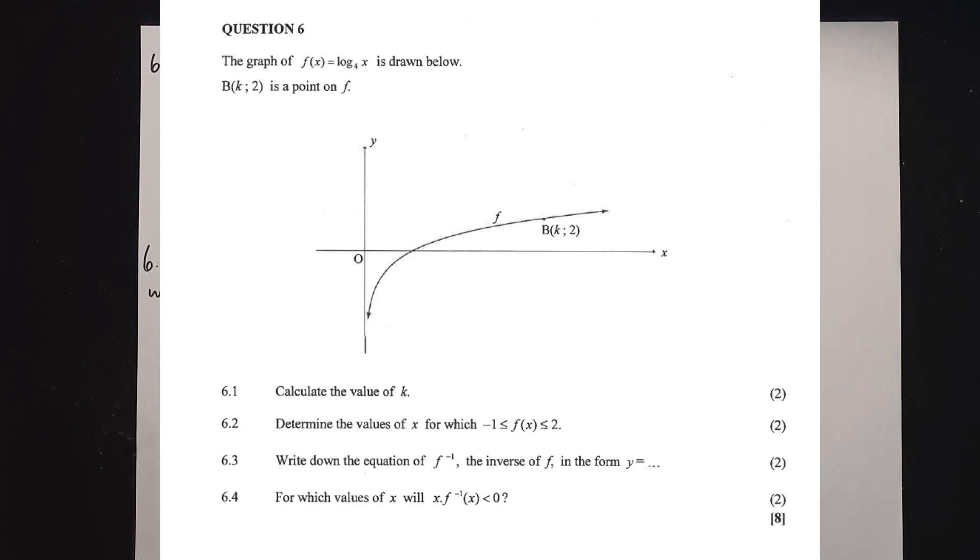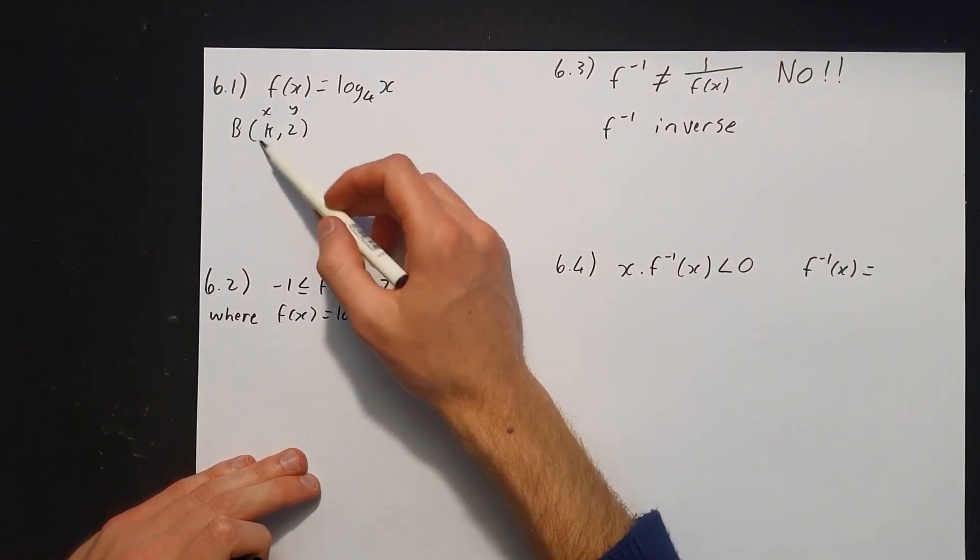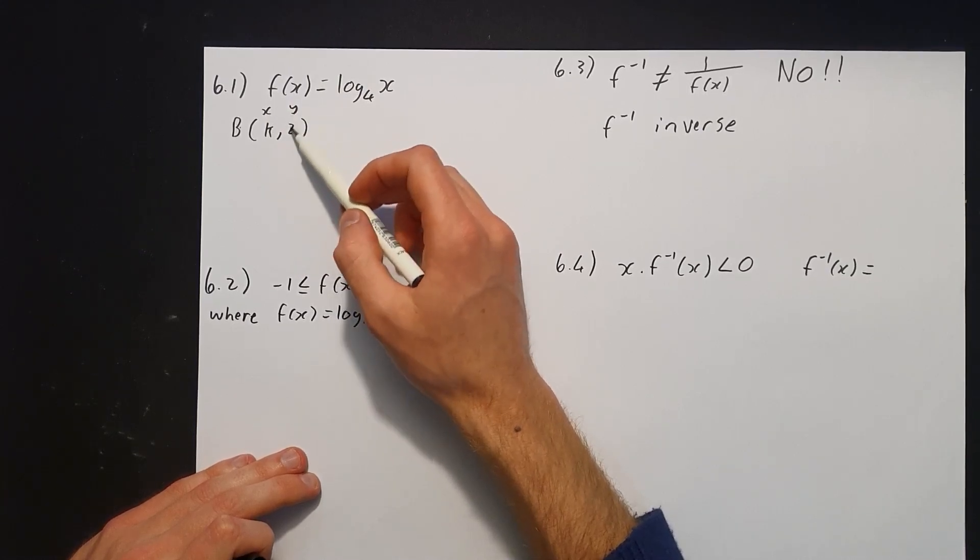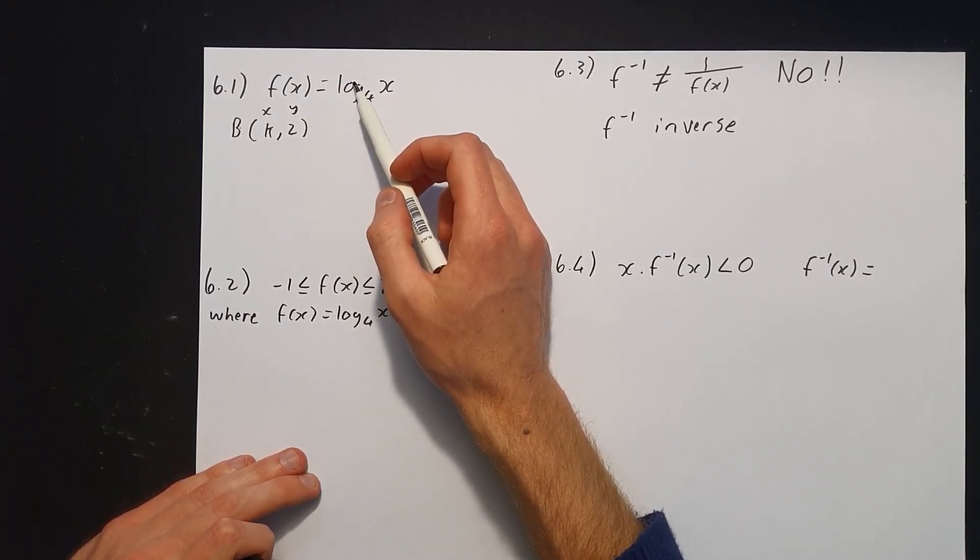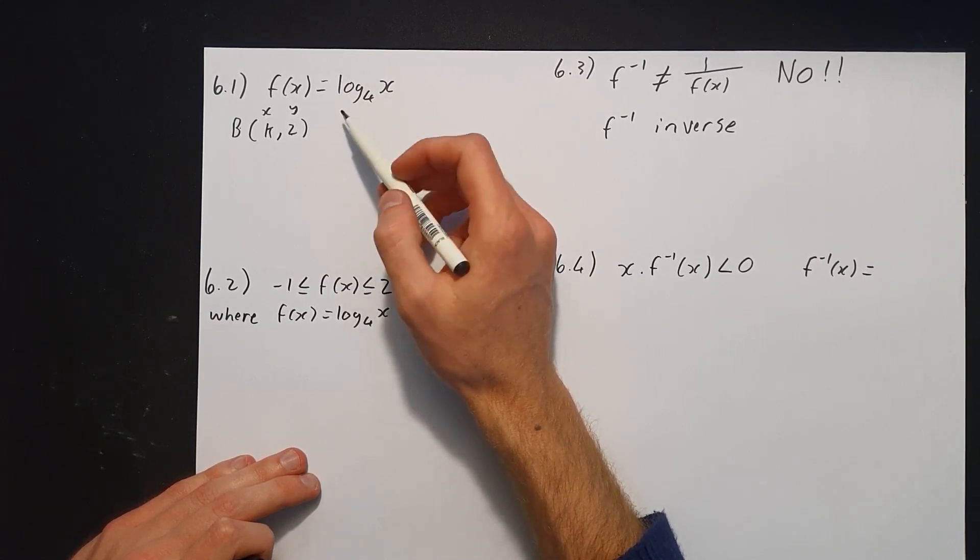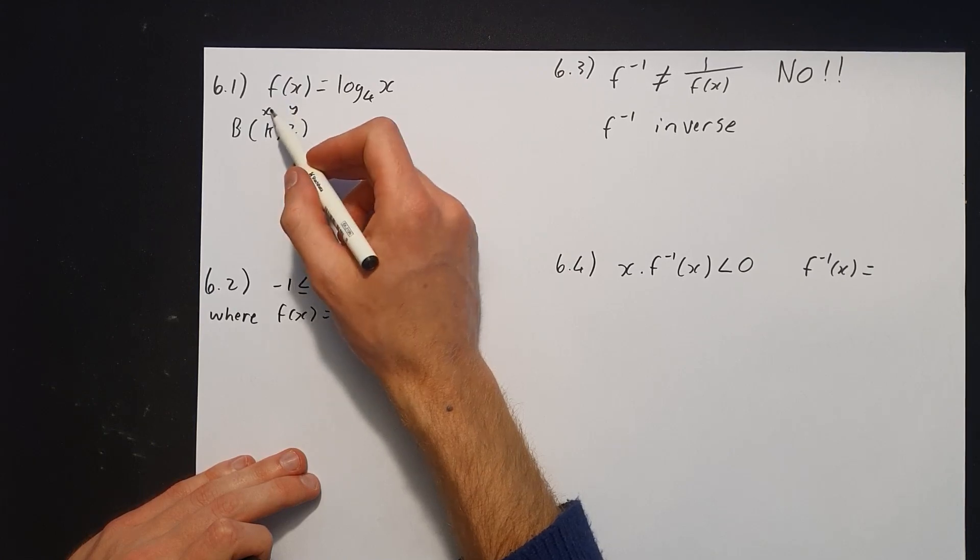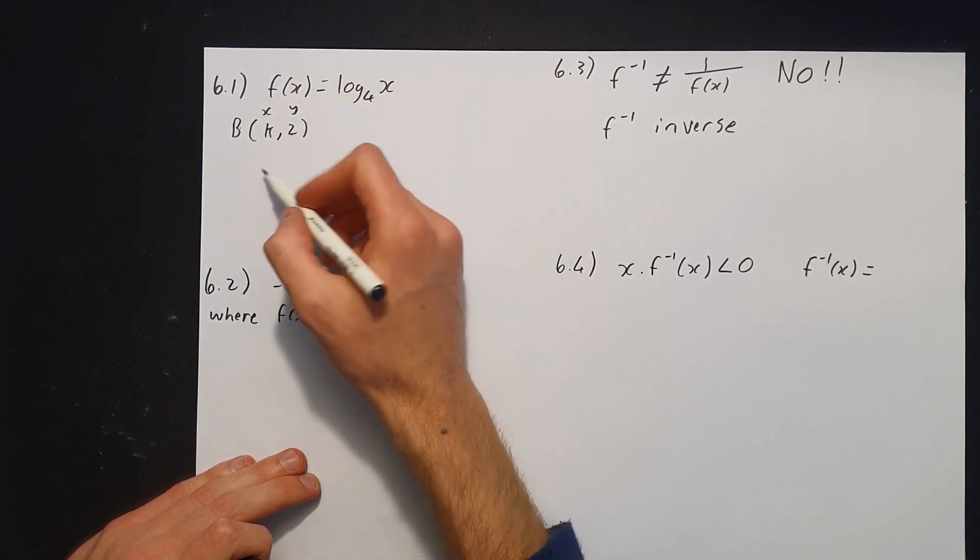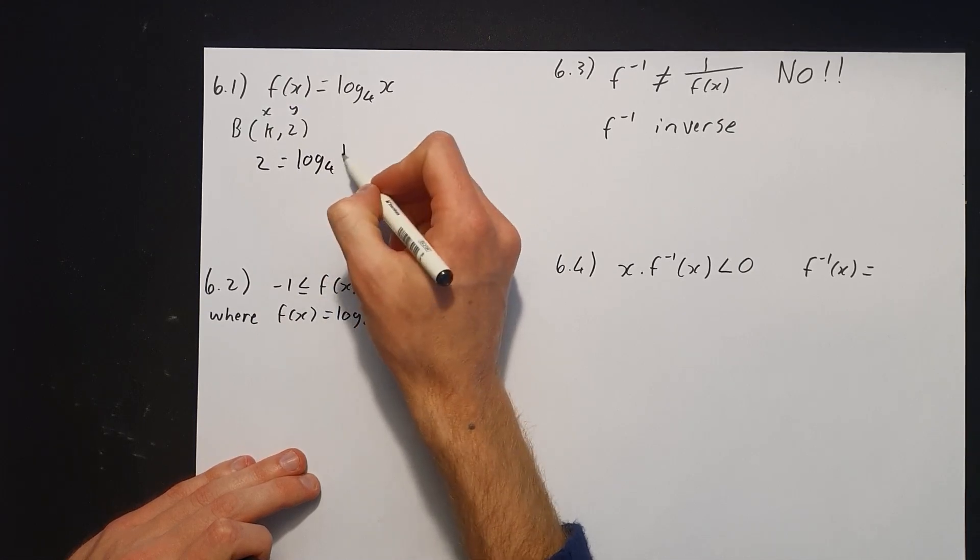So 6.1 says calculate the value of k. We can see that B is the point that holds k and 2. k is our x value, 2 is our y value, plus we have our function. Now we just have to substitute in and solve for k. We're going to substitute 2 into y's value and k into x's value. So we're going to have 2 = log₄(k).